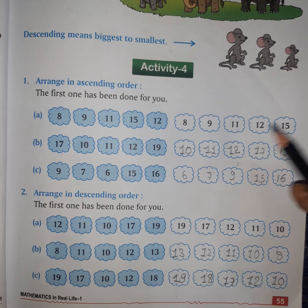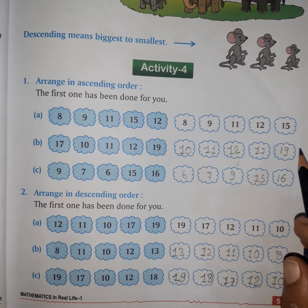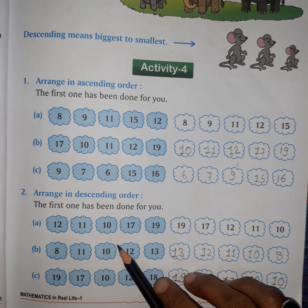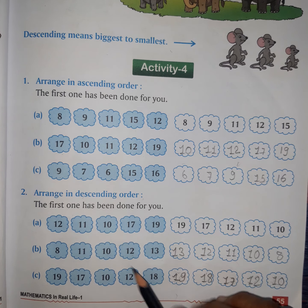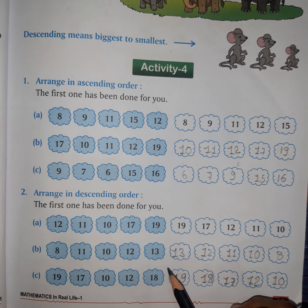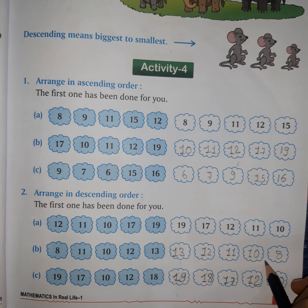Ascending order means smallest to biggest, and descending order means biggest to smallest.